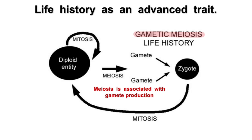You get used to this idea of two gametes — one can be, for example, sperm, and another one is an egg cell. When they join, they form a diploid zygote. So gametes are haploid and have only one set of chromosomes, while the zygote is diploid — it is a fertilized egg cell fertilized with sperm.